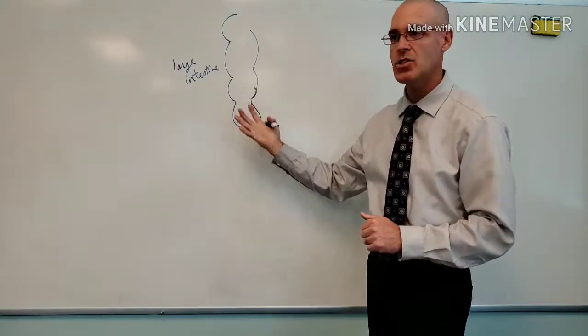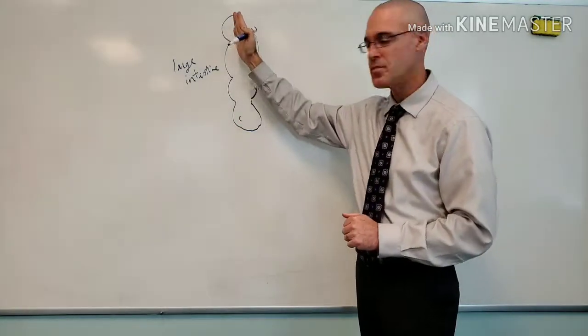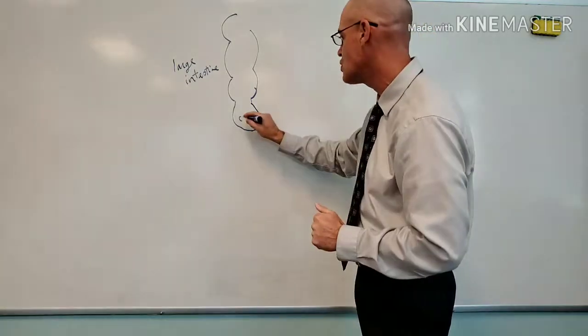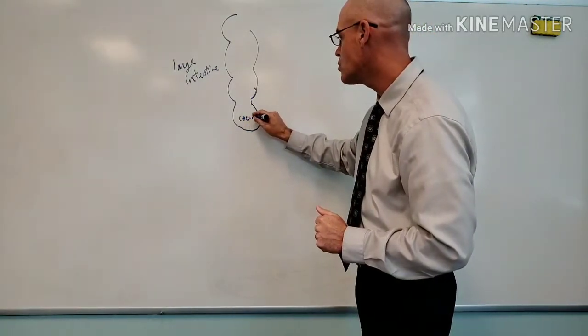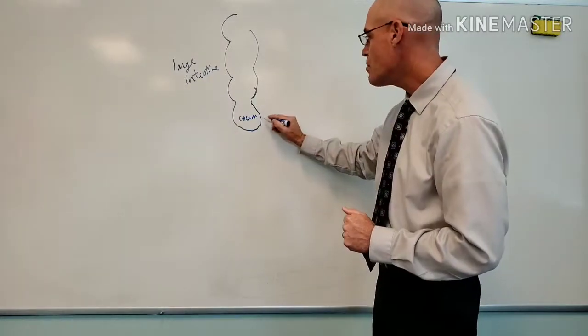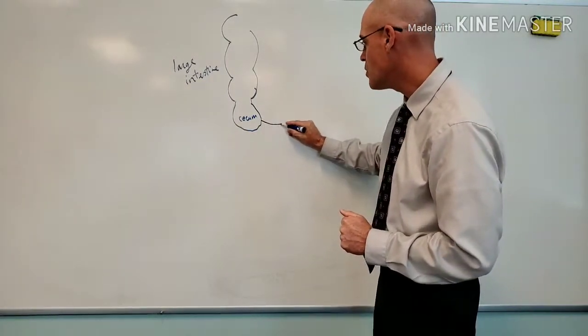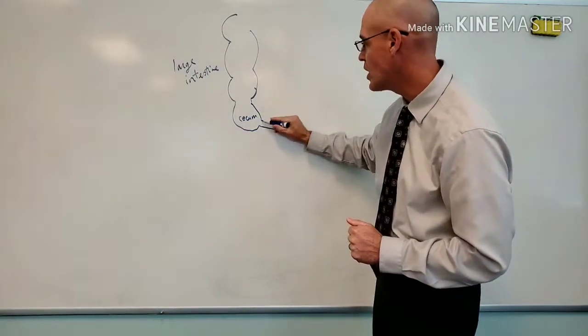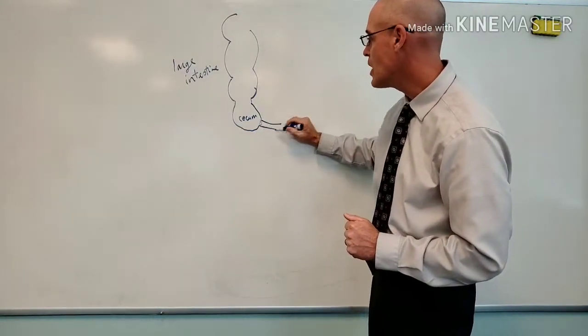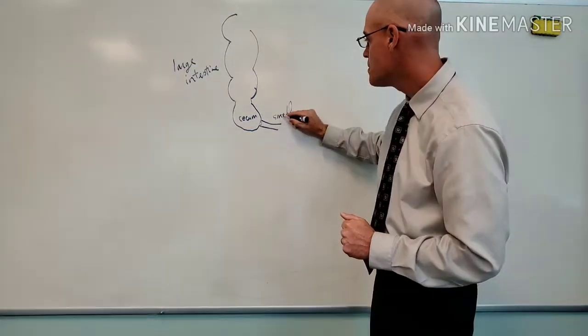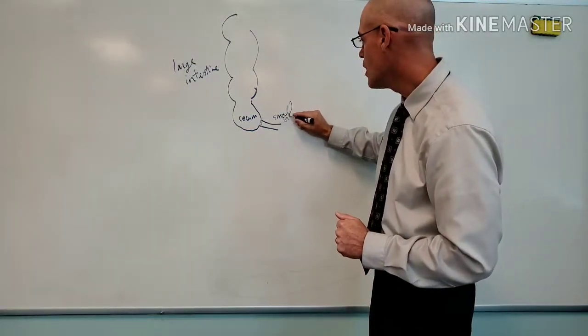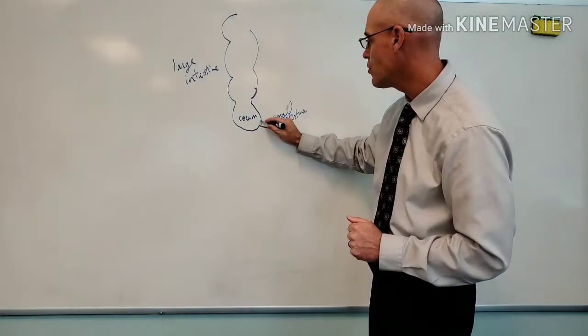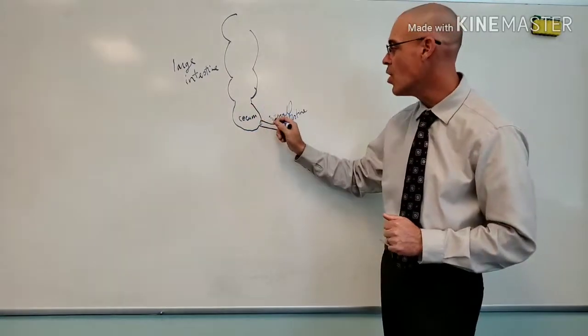But specifically, it would be on the very start, the very beginning of the large intestine, in an area referred to as the cecum. So right before the cecum, just so we know we're on the same page, we would obviously be in the small intestine. And there's actually a little valve here that separates the small intestine from the large, and this little valve is referred to as the ileocecal valve.